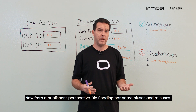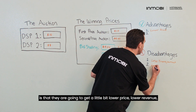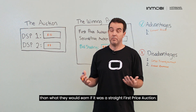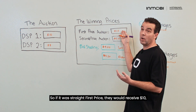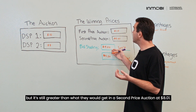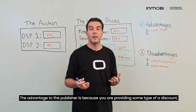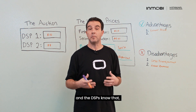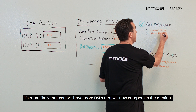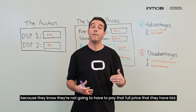From a publisher's perspective, bid shading has pluses and minuses. The negative is that the publisher will get a lower price — lower revenue than what they'd earn in a straight first price auction. If it was straight first price they'd receive $10, but with bid shading applied they'll get $9 or $9.20 — a bit less. However, it's still greater than the $8.01 they'd get in a second price auction. The advantage is that by providing a discount, more DSPs are likely to compete in the auction — including those without a first price bidding algorithm — since they know they won't have to pay the full bid price.